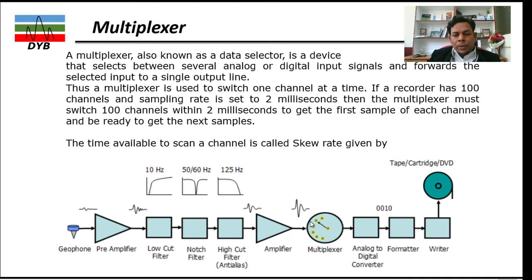This is an example of six channels. First channel will come here, then second, third. In two milliseconds again it comes back here. The time available to scan a channel is called the skew rate. If you have two milliseconds and eight channels, it's 0.25.